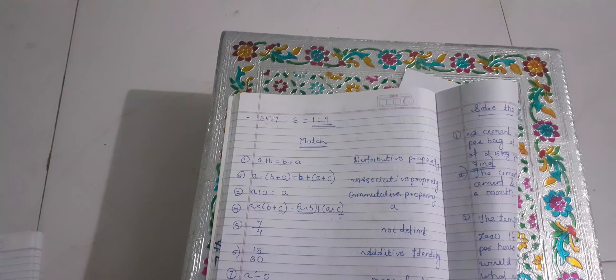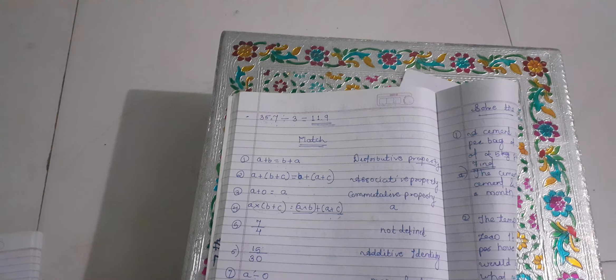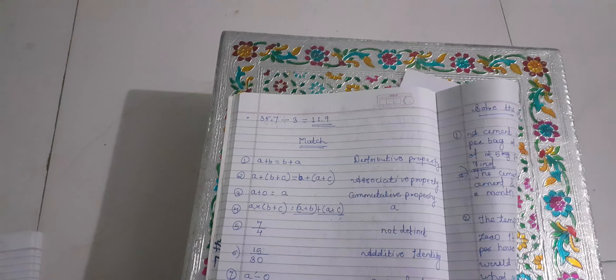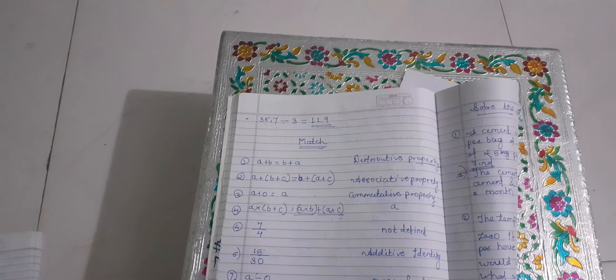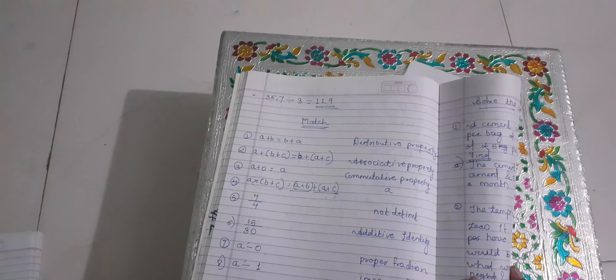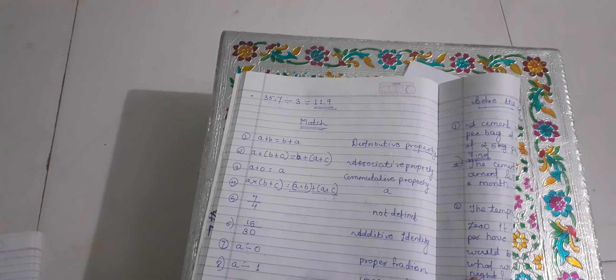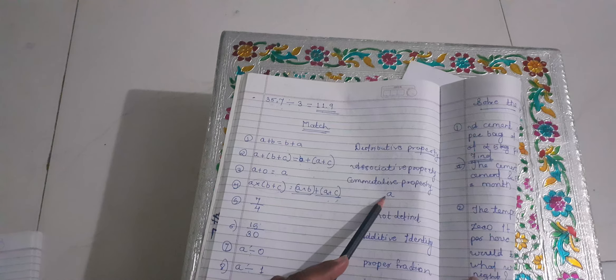435 divided by 1000 — you just put the decimal after 3 places, so the answer will be 0.435. Then, 4 divided by (2 divided by 4) — you take the reciprocal of that fraction, so 2 divided by 4 becomes 4 divided by 2. So 4 multiplied by 4 divided by 2: 2 twos are 4, the answer is 8.